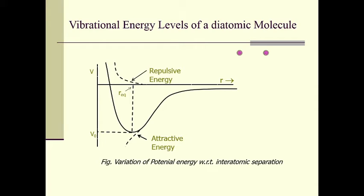We know that when two atoms combine to form a stable molecule — for example, HCl or carbon monoxide — they do so because of some internal electronic rearrangement. When two atoms come closer, there will be some rearrangement of the electronic structure of these two atoms when the molecule is formed. There are several interactions between the ions and electrons in the two atoms.